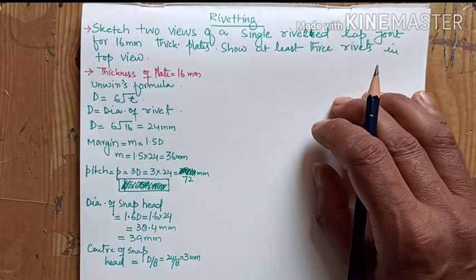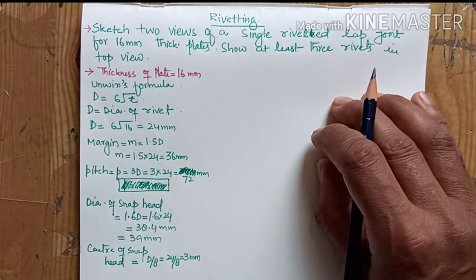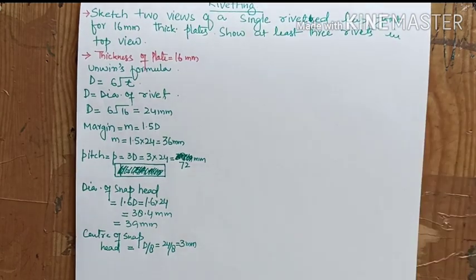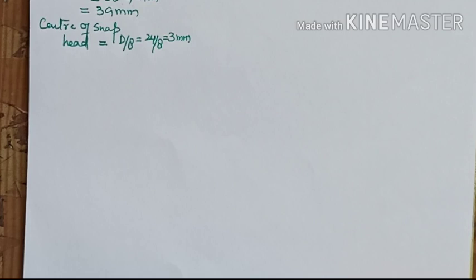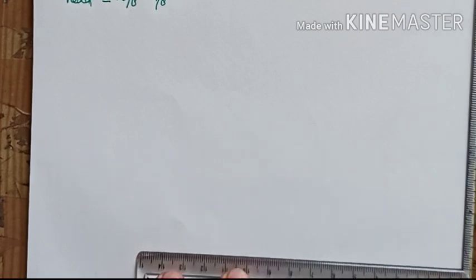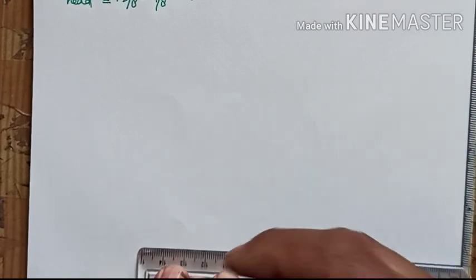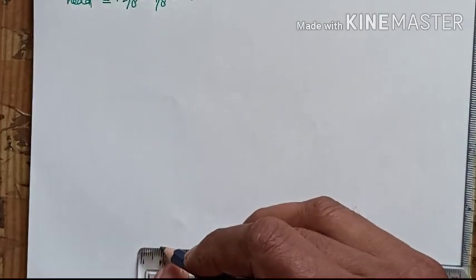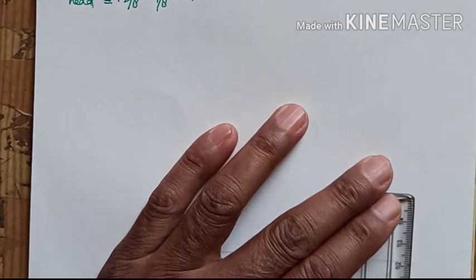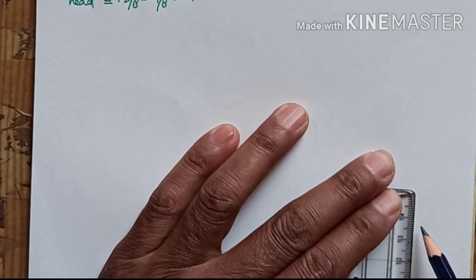Let's start with the sectional front view. First of all we'll draw the sectional front view, so we'll start with the plates. We have to draw two plates they overlap with each other.